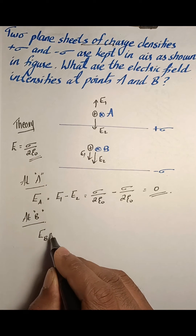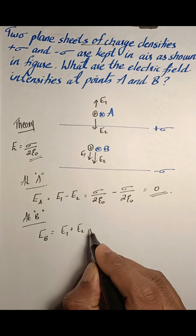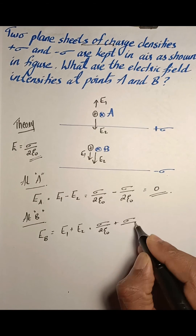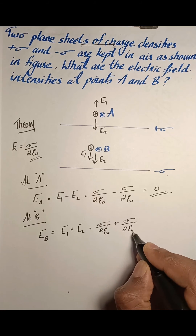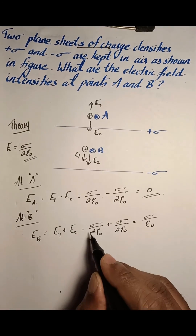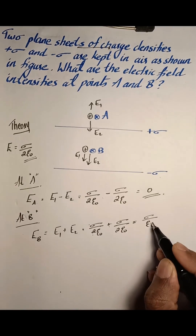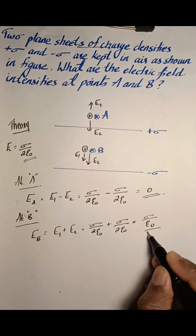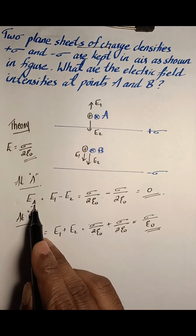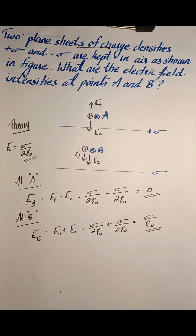So the electric field at B equals E1 plus E2, which is sigma by two epsilon zero plus sigma by two epsilon zero, equal to sigma by epsilon zero. Since one-half plus one-half equals one, it becomes sigma by epsilon zero. Therefore, the electric field at A is zero and at B is sigma by epsilon zero.